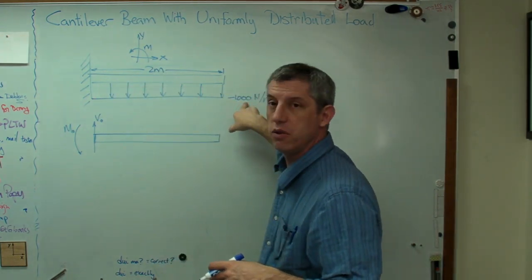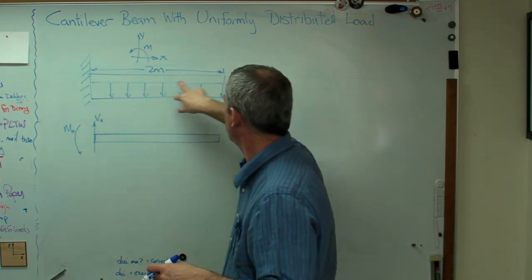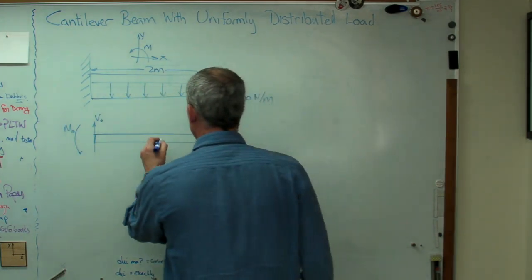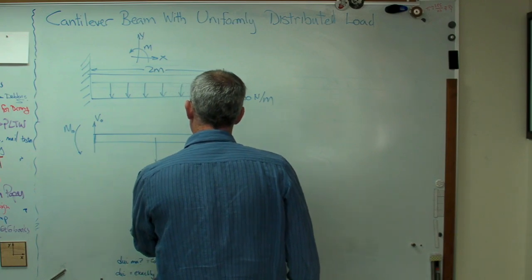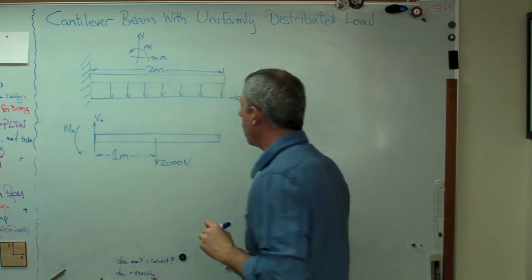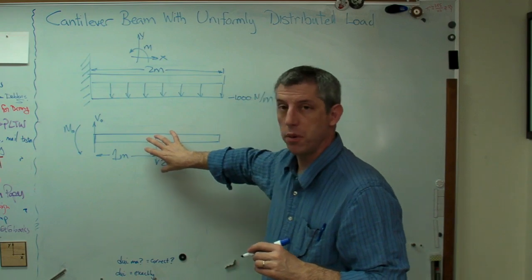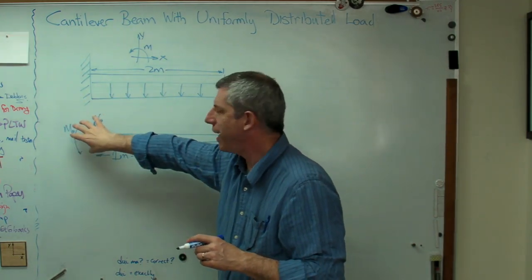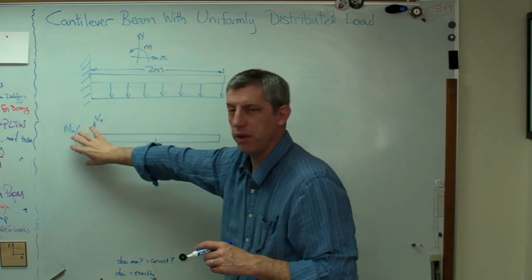Now, for the purposes of calculating the reaction forces, I can concentrate this load in the correct place. Well, it's 2 meters times 1,000 newtons per meter. It's going to be 2,000 newtons down. And I'll apply the load at the centroid of this shape right here. Well, the centroid is just the middle. It's a rectangle. So there's 2,000 newtons down, and that's 1 meter. And so there we go.